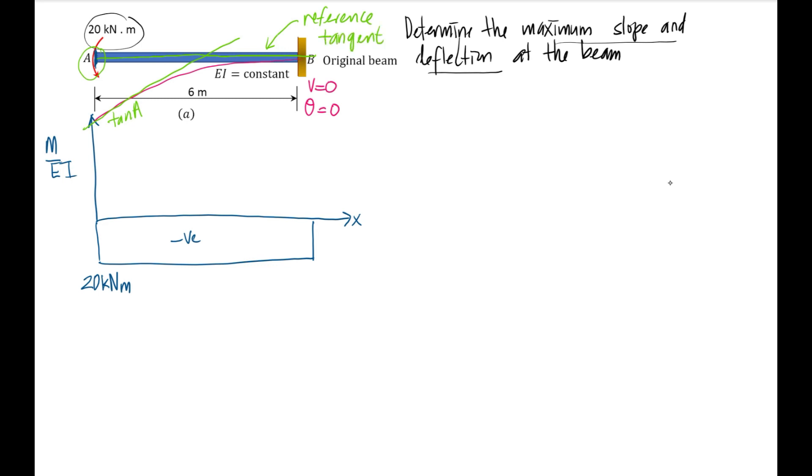So you have two tangents here: reference tangent and tangent A. Therefore, we can see between these two tangents there will be angle θ_A, which is the same as the tangent here. Applying theorem number one, the slope at the free end A equals the area of